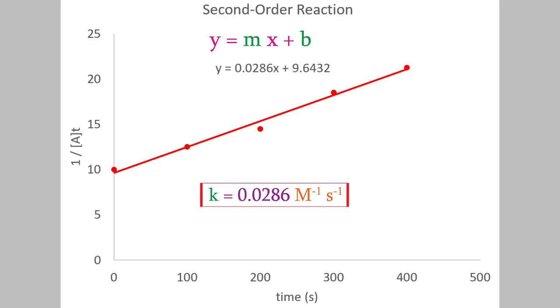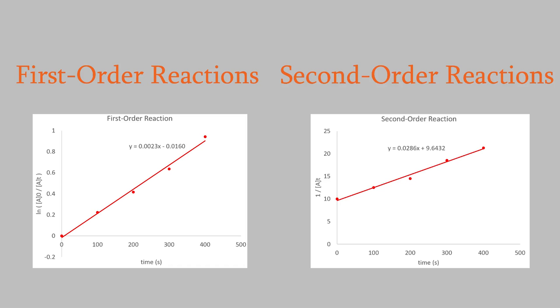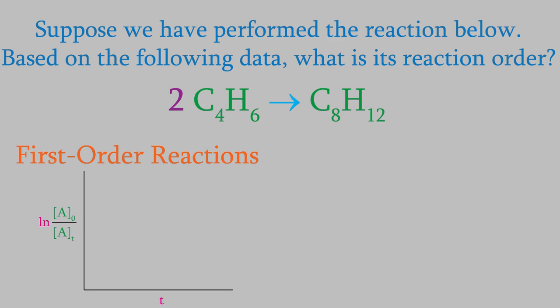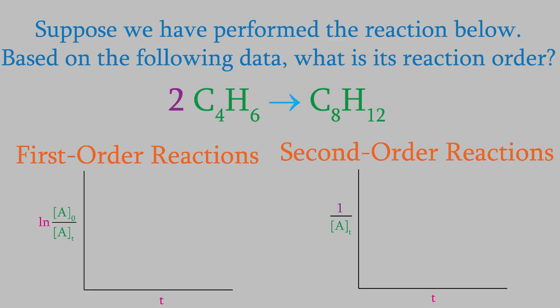We just saw that when we have data for the concentration of a reactant over time, we can make a graph for both first-order and second-order reactions. That's an especially useful trick — one of the great things we can do with graphs like this is figure out what the reaction order is for a new reaction. For example, suppose we've just discovered a new reaction in which the reactant butadiene slowly forms products. For a first-order reaction, we have time on the x-axis and the logarithm of a0 over at on the y-axis. And for a second-order reaction, it's time on the x-axis again and 1 over at on the y-axis.